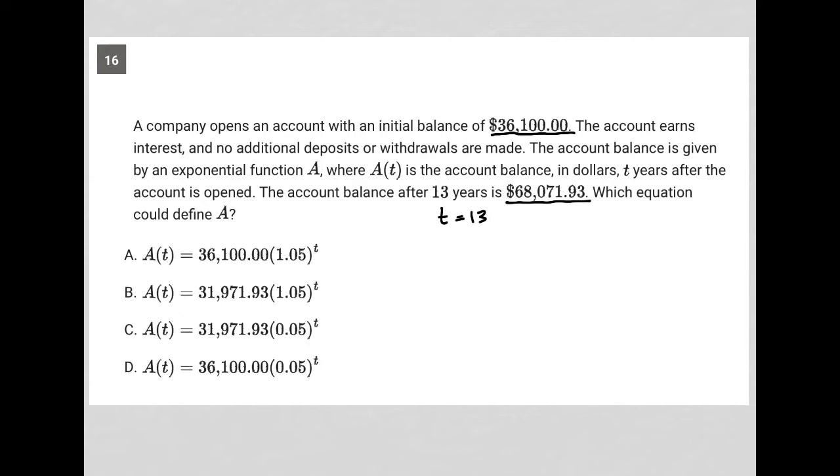Well, I'm going to use a strategy here called plug-in information from the question, PIQ, because they're telling us that A(t) equals $68,071.93 when t is equal to 13.